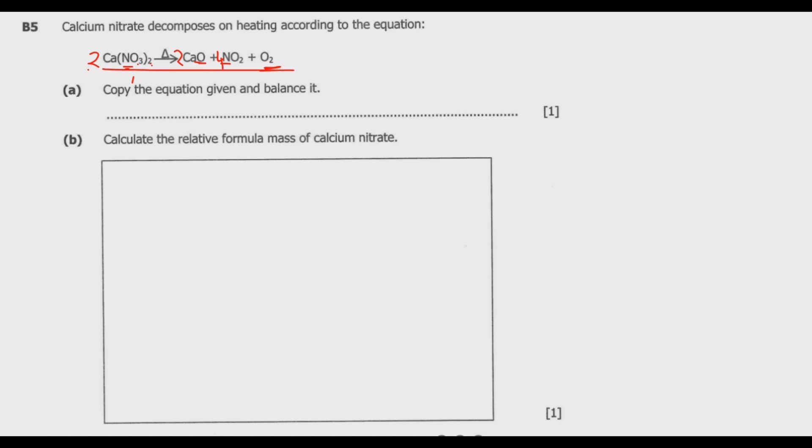Then I can copy it to write it as 2 calcium nitrate like this. Then upon decomposition will give us 2 calcium oxide, then 4 nitrogen dioxide, then plus oxygen. So this will be the balanced equation.